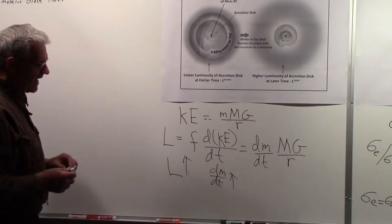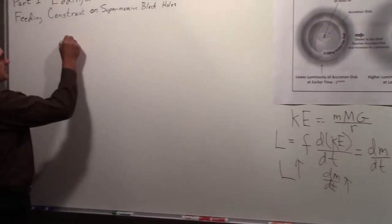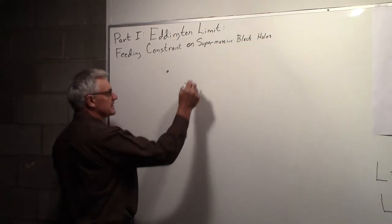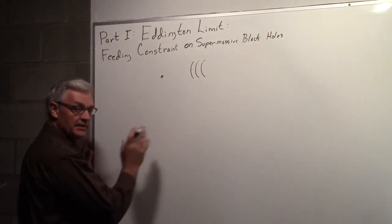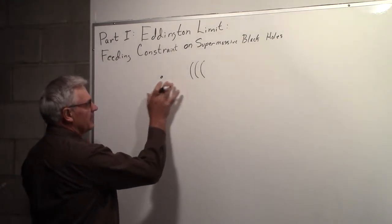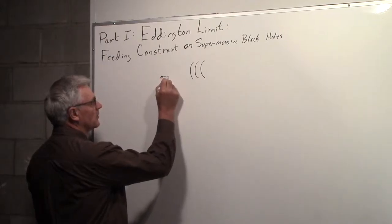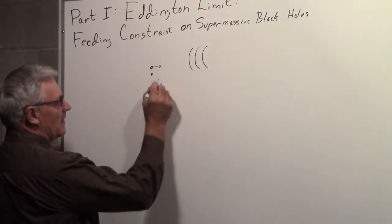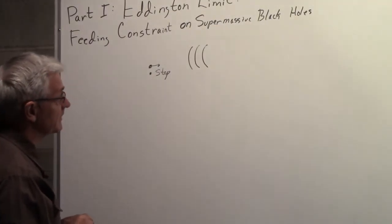But will that really happen? The answer is no. Here's the particle coming into the accretion disk, and here's the radiation being emitted by the accretion disk. That radiation will cause a pressure on this incoming particle which can make it stop, simply speaking.